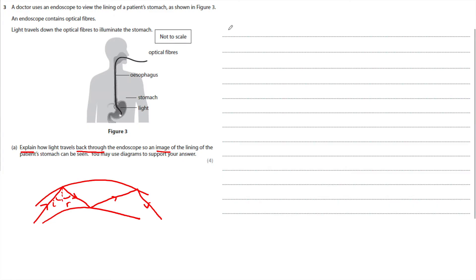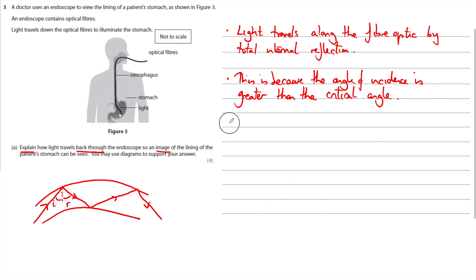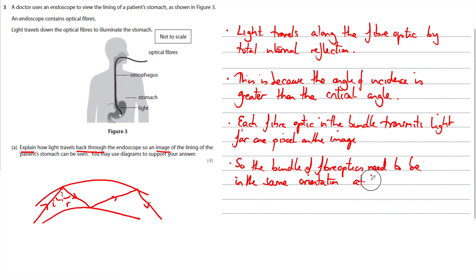So I would write this: light travels along the fiber optic by total internal reflection. This is because the angle of incidence is greater than the critical angle. Each fiber optic in the bundle transmits light from one pixel on the image. So the bundle of fiber optics need to be in the same orientation at the start and end of the bundle to produce a clear image.